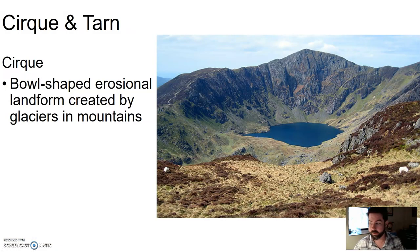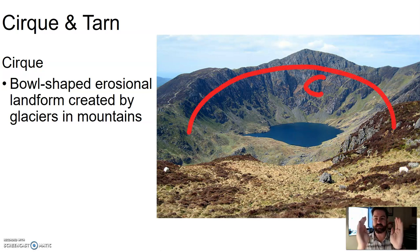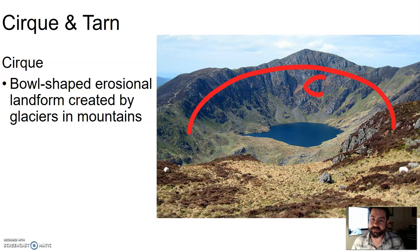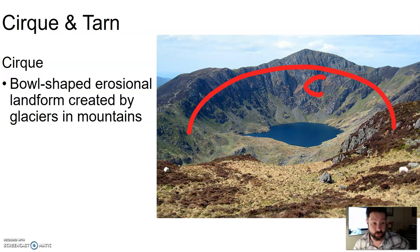A cirque is a bowl-shaped erosional landform created by glaciers in the mountains. If there's a glacier in a cirque, then it's a cirque glacier. This is a kind of bowl-shaped, rounded, stadium-like amphitheater that's carved as a glacier sits in there and moves — it carves and digs it out. That amphitheater, that bowl-shaped thing, that's the cirque.